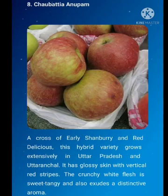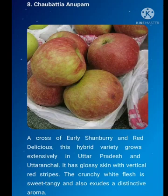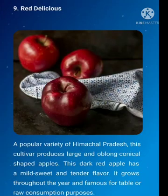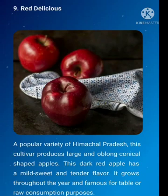Chaubatia Anupam. A cross of Early Shambari and Red Delicious, this hybrid variety grows extensively in Uttar Pradesh and Uttaranchal. It has glossy skin with vertical red strips. The crunchy white flesh is sweet tangy and also exudes a distinctive aroma. Red Delicious, a popular variety of Himachal Pradesh, this cultivar produces large and oblong conical shaped apples. This dark red apple has mild sweet and tender flavor. It grows throughout the year and is famous for table or raw consumption purposes.